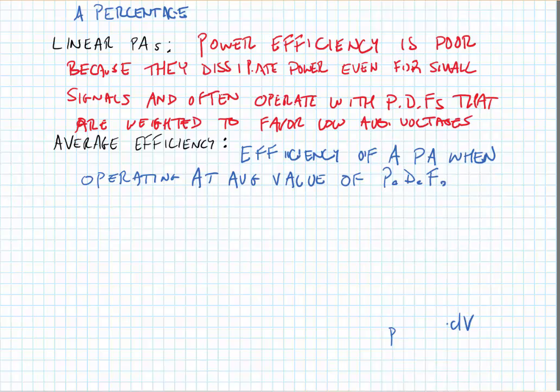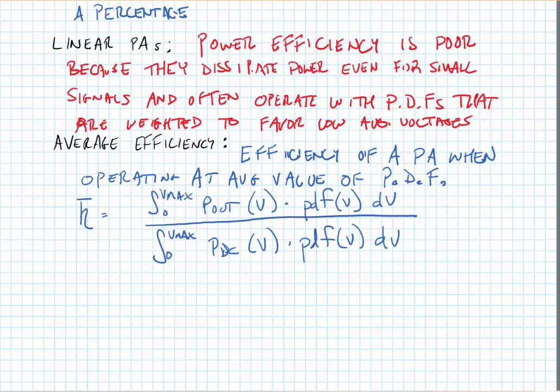We can look at the average efficiency as the average drain efficiency or the average total power added efficiency. I'll write the formula for both. The drain efficiency is the integral of the power output as a function of the voltage weighted by the probability density function of the signal as a function of the voltage, integrated from zero to the maximum voltage output value, divided by the integral from zero to Vmax of PDC as a function of the output voltage times the probability density function as a function of the voltage.